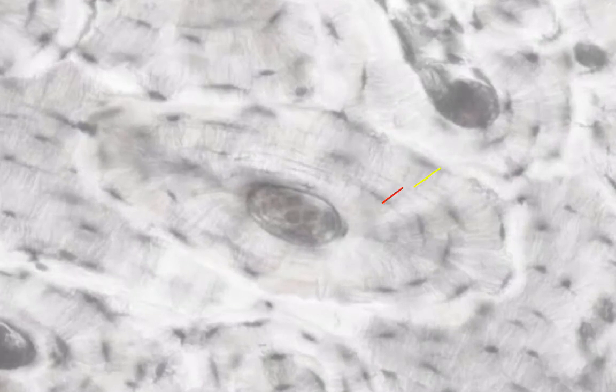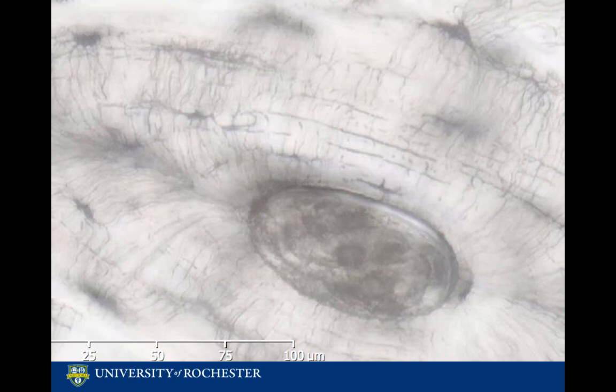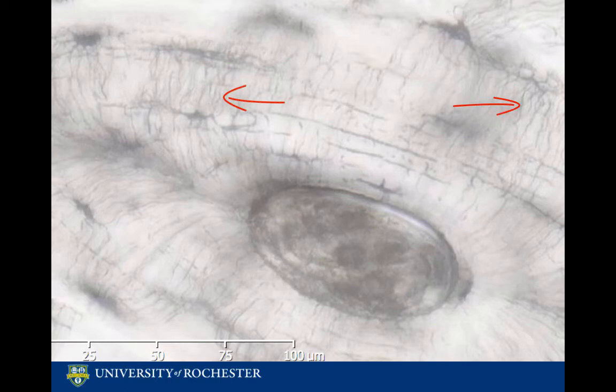We can also note the concentric layers surrounding the haversian canal, which are called lamellae. Like spongy bone, compact bone also has lacunae, which are the sites of mature osteocytes. We can also note these long channels running through the lamellae called canaliculae, which connect lacunae and provide a system for routing nutrients to osteocytes.